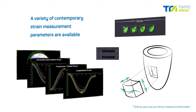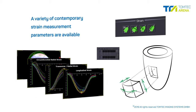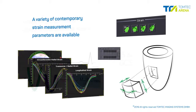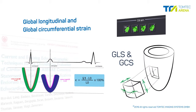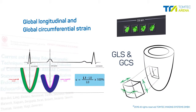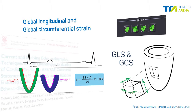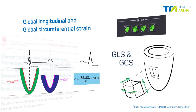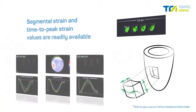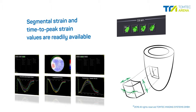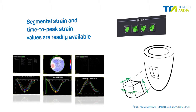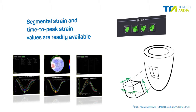To assess subclinical myocardial deformation and to monitor patients at risk for heart failure, a variety of contemporary strain measurement parameters are available. Global longitudinal and global circumferential strain, according to international guidelines, is reported. Segmental strain and time-to-peak strain values are readily available and supported with intuitive graphics.